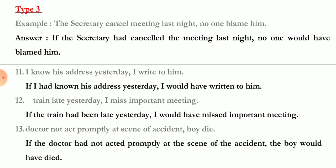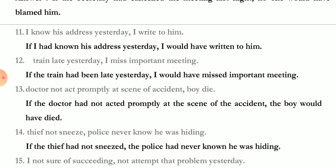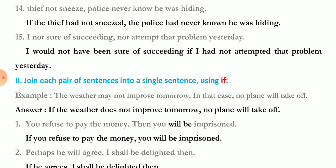'Doctor not act promptly at scene of accident / boy die' — 'If the doctor had not acted promptly, the boy would have died.' 'Thief not sneeze / police never know he was hiding' — 'If the thief had not sneezed, the police would never have known he was hiding.' 'I not sure of succeeding / not attempt that problem yesterday' — 'I would not have been sure of succeeding if I had not attempted that problem yesterday.'